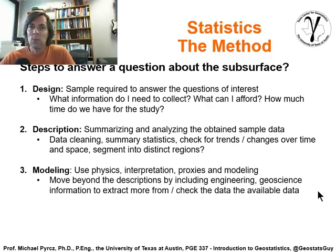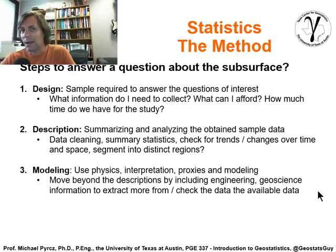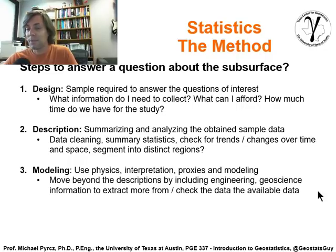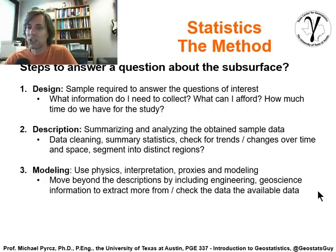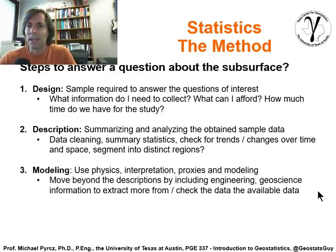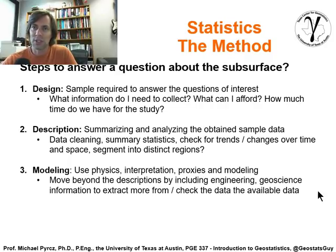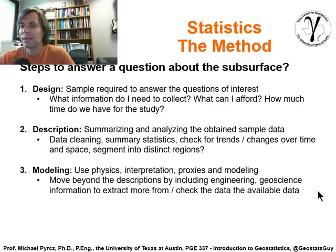Description is where you look at the data and try to understand it — summarizing and analyzing the obtained sample data. This is data cleaning: looking for obvious errors or perhaps subtle errors in the data due to the way it was handled or collected. Summary statistics — finding out in general how the data behaves. Check for trends and changes over time and space, and segment it into distinct regions if things are changing enough. This data cleaning step often is 80% of the work in a reservoir characterization or geostatistical study.